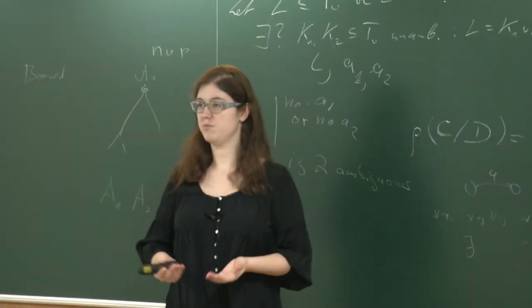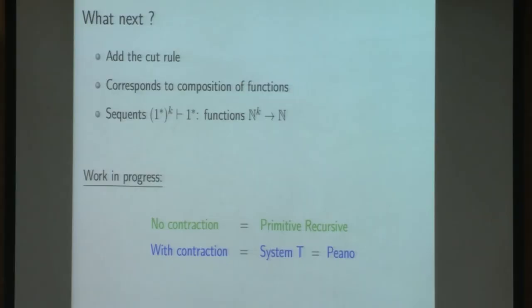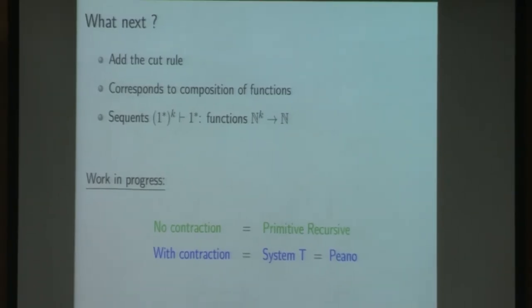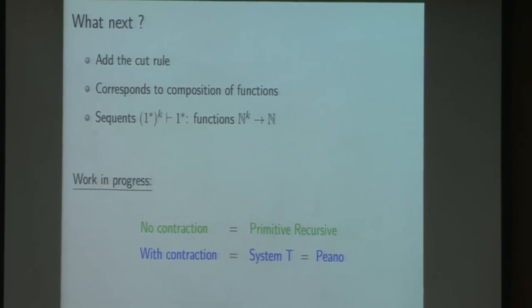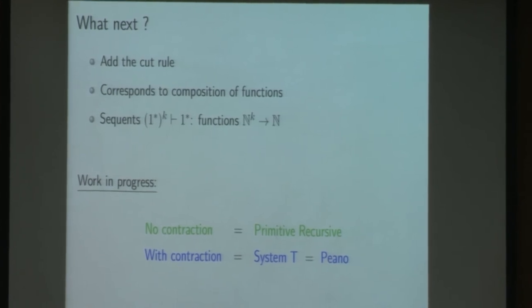Okay, so a bit of perspective and future work about this. First of all, there is a very common rule that we don't have in our system: it's a cut rule, because it doesn't fit with this restricted form shape of sequence. But it will be very natural in a more extended shape to add it because it corresponds naturally to the composition of functions in the computational interpretation.